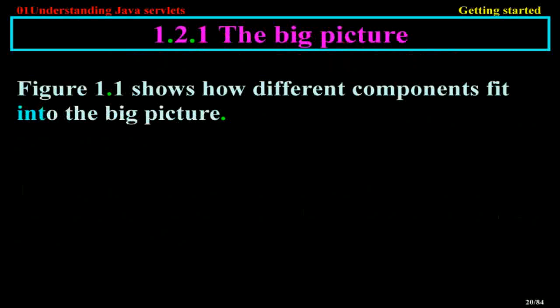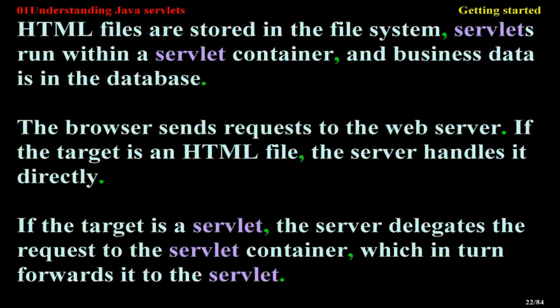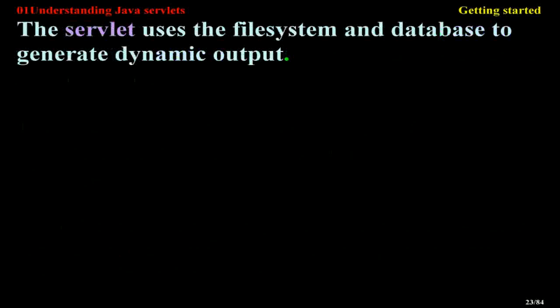The Big Picture. Figure 1.1 shows how different components fit into the Big Picture. All the components of a web-based application: HTML files are stored in the file system, Servlets run within a Servlet container, and business data is in the database. The browser sends requests to the web server. If the target is an HTML file, the server handles it directly. If the target is a Servlet, the server delegates the request to the Servlet container, which in turn forwards it to the Servlet. The Servlet uses the file system and database to generate dynamic output.